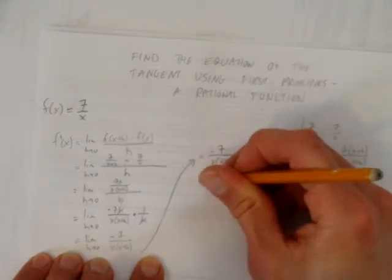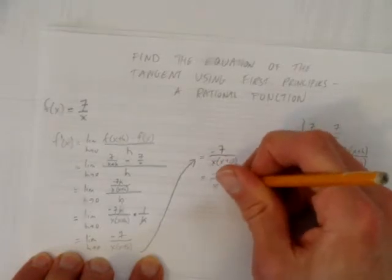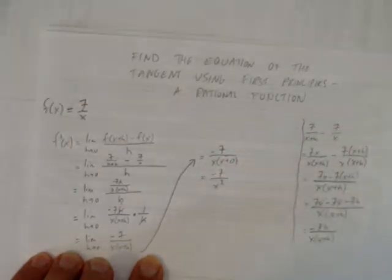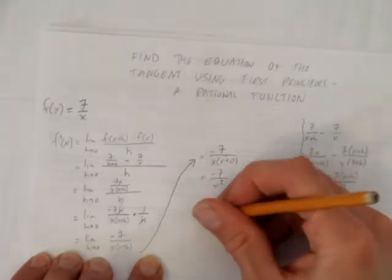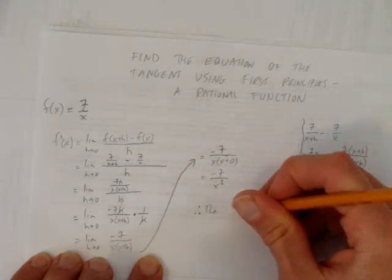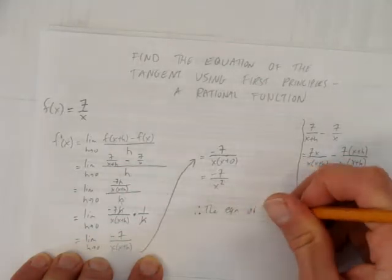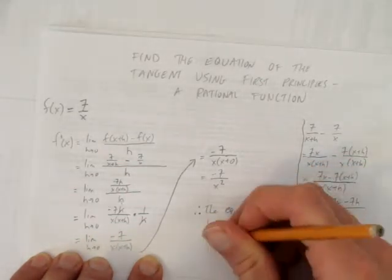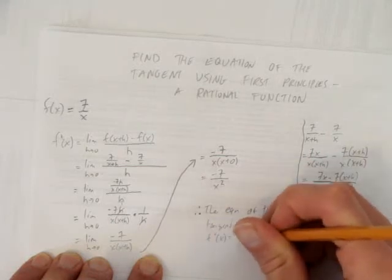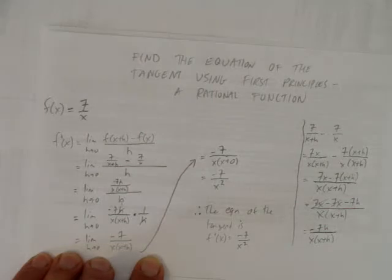So we get negative 7 over x times x, which is, of course, x squared. And now we have the equation of our tangent, or the equation of our derivative. And so we'll write a final statement. The equation of the tangent is f prime at x equals negative 7 over x squared. And what we've done is solve for the equation of the tangent using first principles.